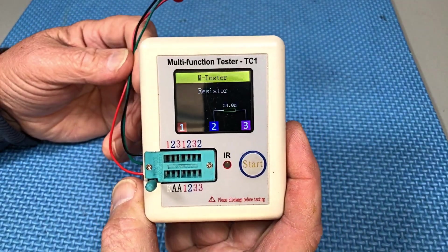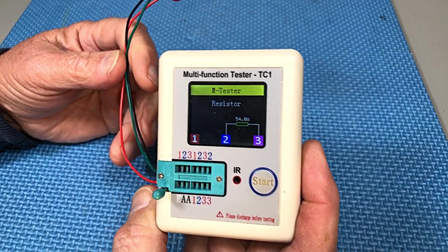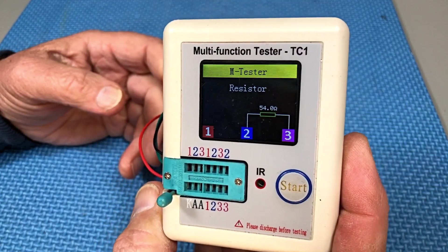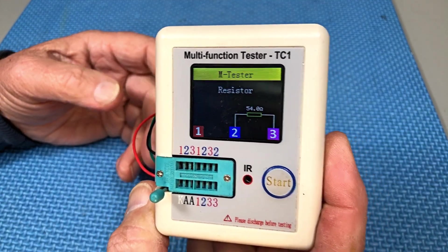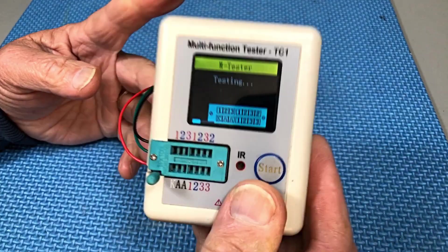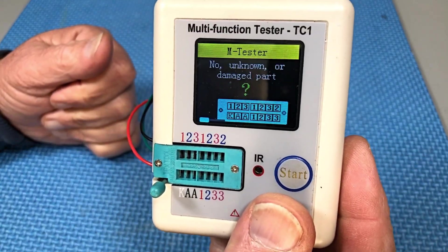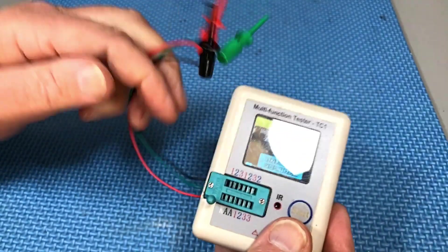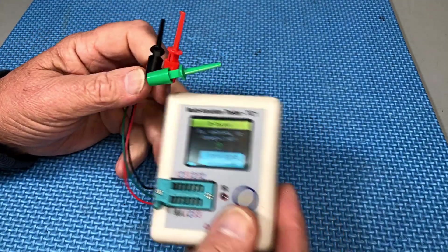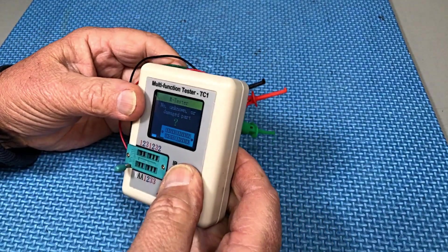Well, it thinks I've got a resistor and it thinks it's 54 ohm. Maybe, yeah. If I do that again, there you go. So it knows its leads are open.